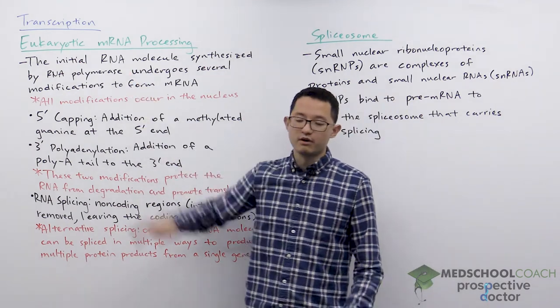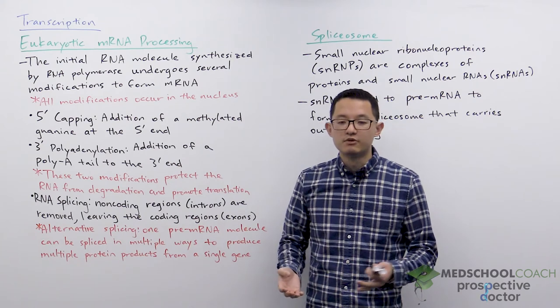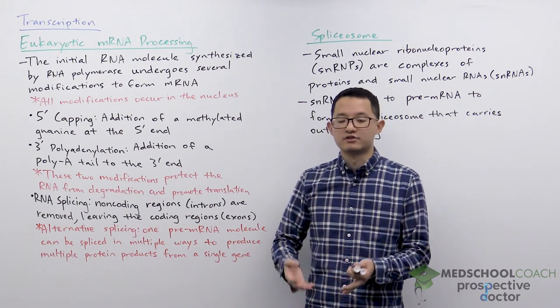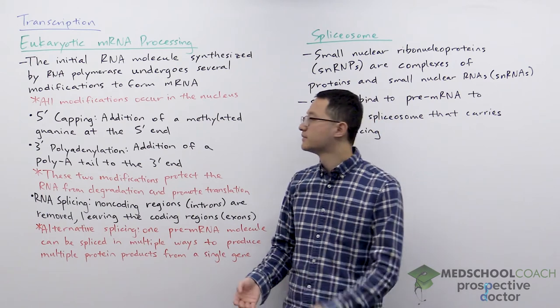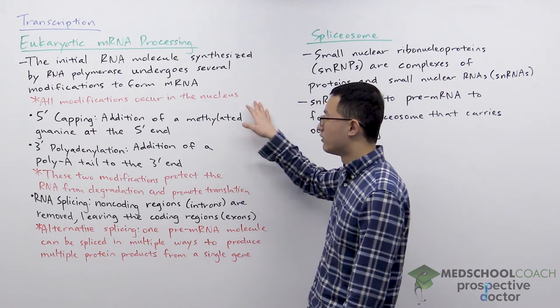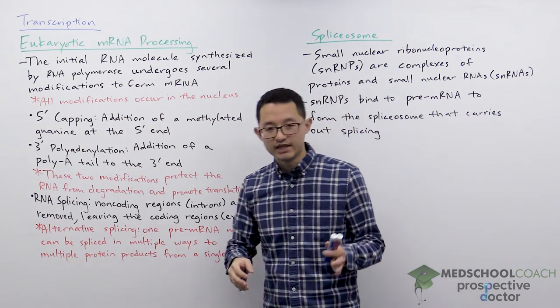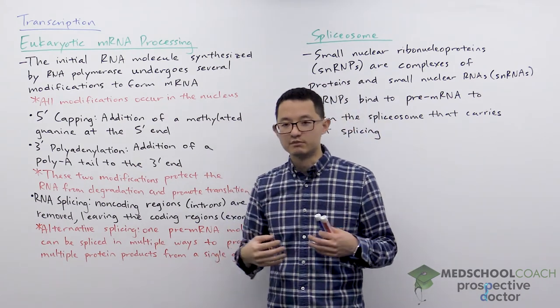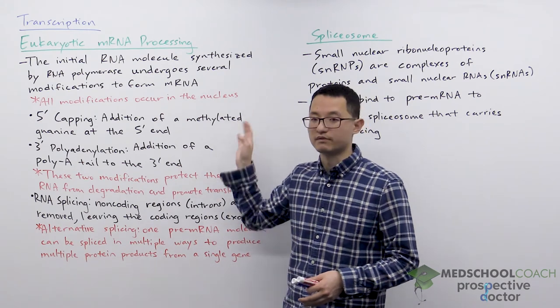So usually the initial RNA molecule that is produced is called pre-mRNA. Once the pre-mRNA undergoes these modifications then it is called mRNA. It's important to note that all these modifications occur in the nucleus, so any mRNA molecule that has been released from the nucleus into the cytosol has completed these modifications.